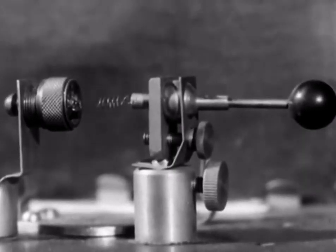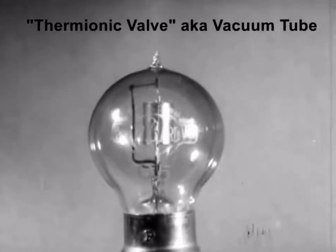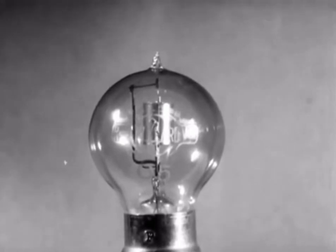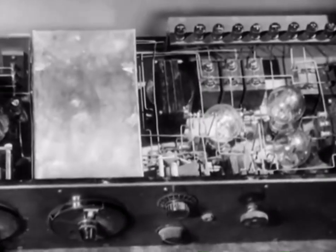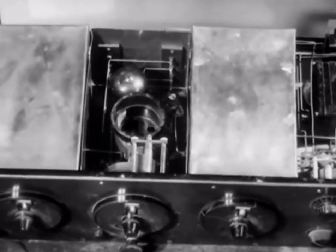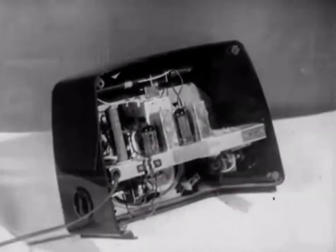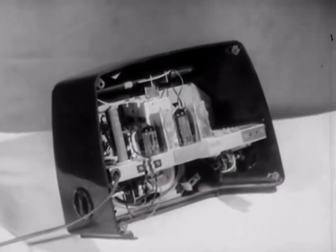Just how the crystal detector operated was never clearly understood, and with the introduction of the thermionic valve, the crystal detector soon became obsolete. This is an early five-valve receiver. Since the time that this set was built, valves have been greatly improved and reduced in size, so that modern receivers can be made smaller and more efficient.